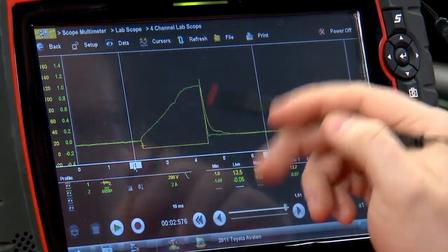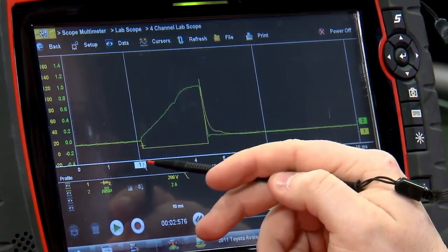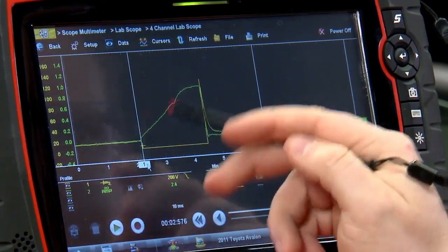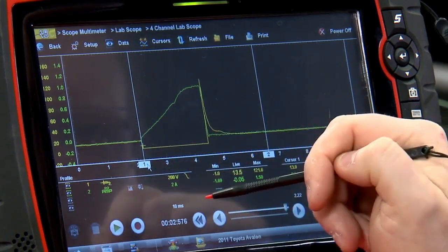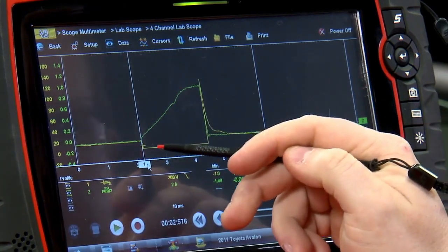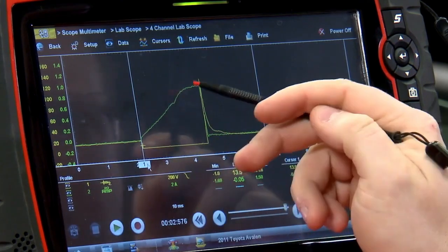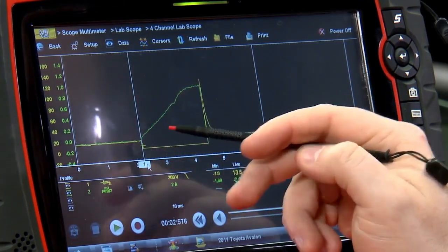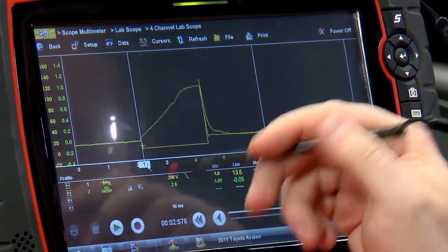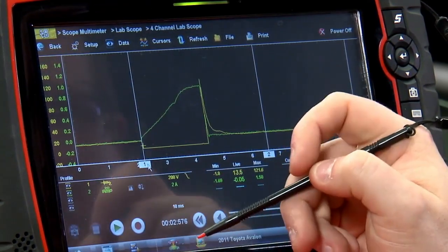Now, as far as the current flowing through, they should ramp up at about the same time as the PCM grounds that injector. It shouldn't have a real high squared off ramp. That'll indicate high resistance and a lot of amperage trying to open that injector. Maybe the injector is sticking.